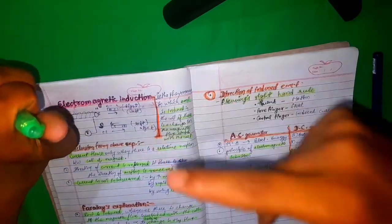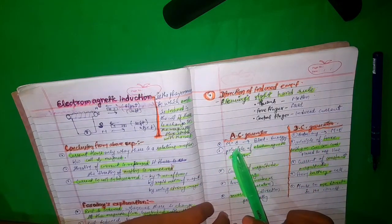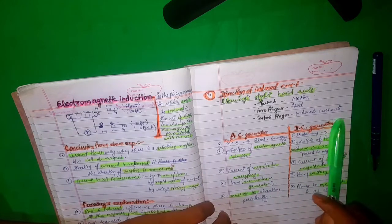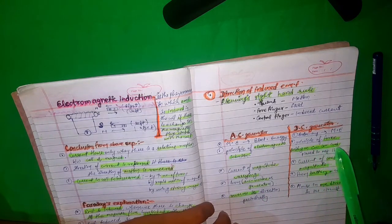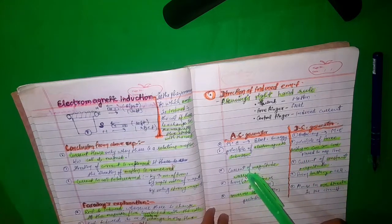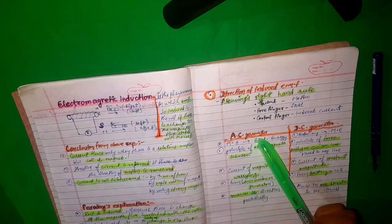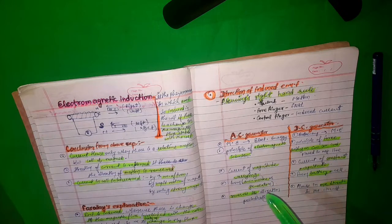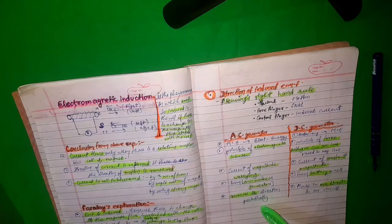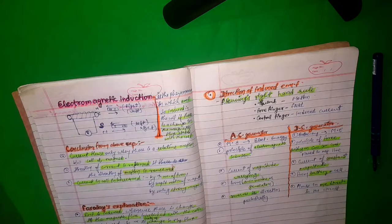AC generator converts magnetic energy into electrical energy; DC generator converts electrical energy into mechanical energy. AC generator works on the principle of electromagnetic induction; DC generator works on the principle of force acting on a current-carrying conductor placed in a magnetic field. In AC generator, the current magnitude varies; in DC generator, the magnitude remains constant. AC is obtained from AC mains or generators; DC is obtained from batteries or cells. AC generator reverses its direction periodically; DC generator always flows in one direction.